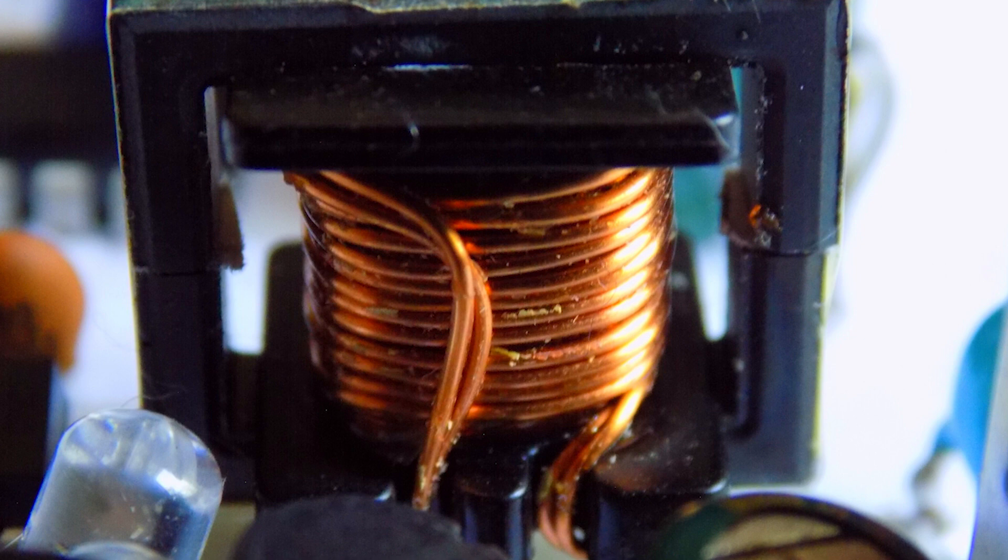I wound the secondary winding with a double wire, making 8 turns. Core diameter 0.4mm.